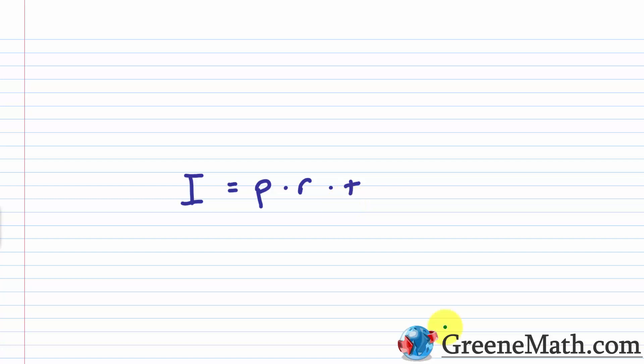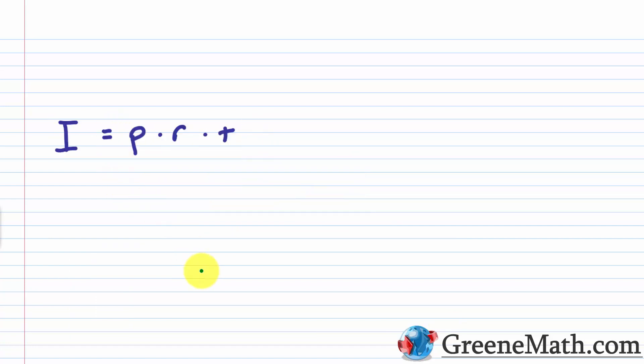We need to understand the difference between simple interest and compound interest. We'll look at compound interest later in the course, but right now we'll deal with simple interest. With simple interest, I only earn interest on the principal or the original amount invested. With compound interest, I earn interest on interest.